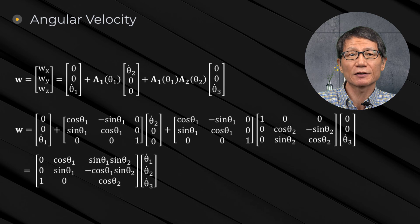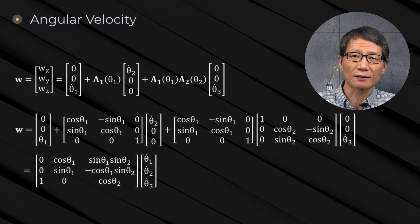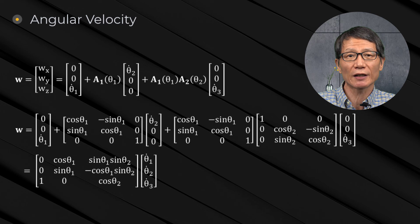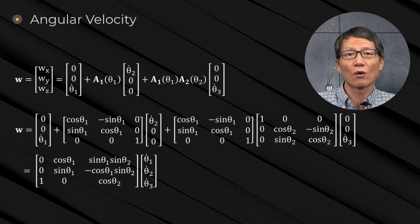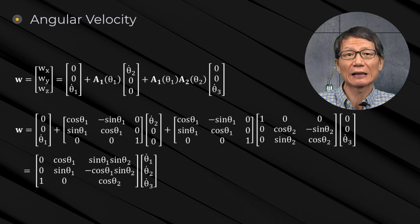However, the inverse of the matrix may not exist at some singular configuration. We call it singularity of the Euler angle. The singularity can be avoided by using different Euler angles or constant shift of one of the Euler angles. However, it is better to use four Euler parameters to remove the fundamental difficulty.